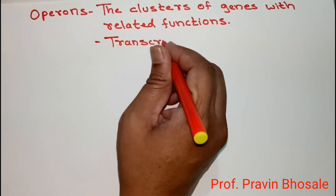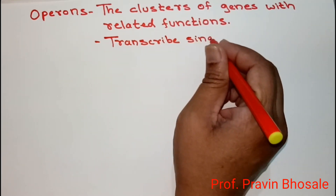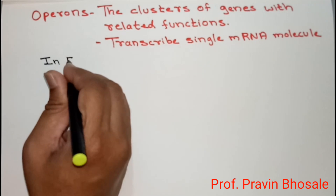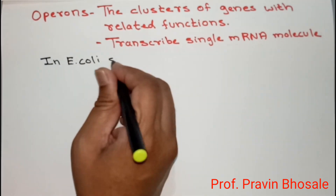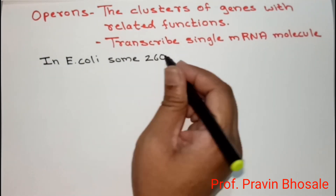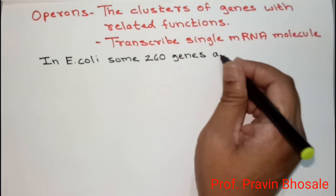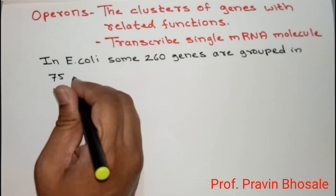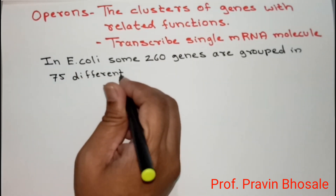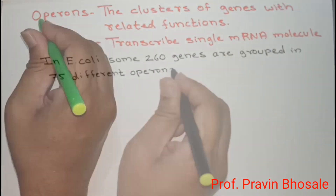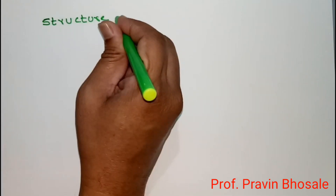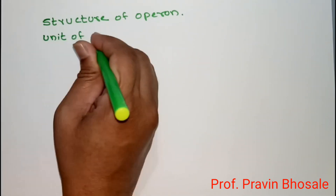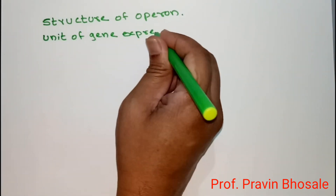Operons transcribe a single messenger RNA. In E. coli, there are about 260 genes grouped into 75 different operons. The operon is a unit of gene expression.